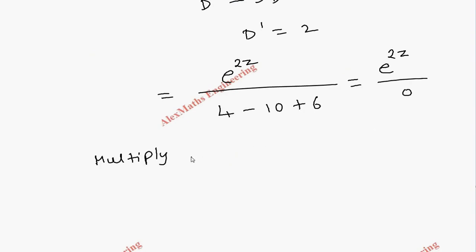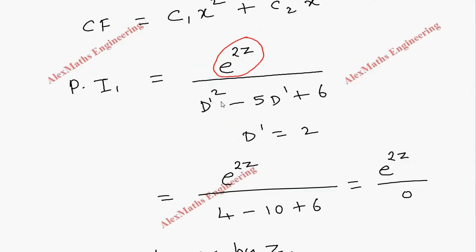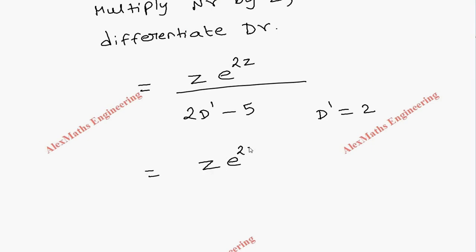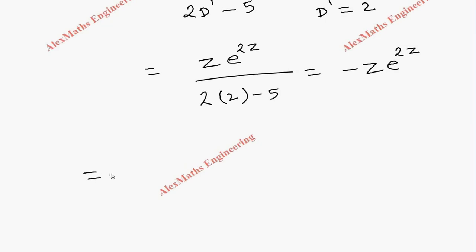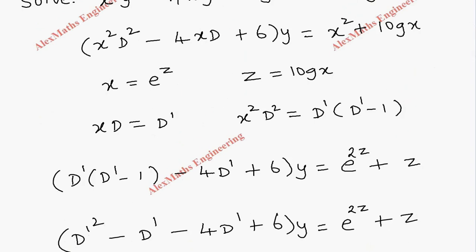Because of this failure case, we multiply the numerator by z and differentiate the denominator. We get z·e^(2z) divided by 2D' − 5. Substituting D' = 2: z·e^(2z) divided by (2×2 − 5) = −1, giving −z·e^(2z). Replacing z = log x and e^(2z) = x², particular integral 1 is −x² log x.